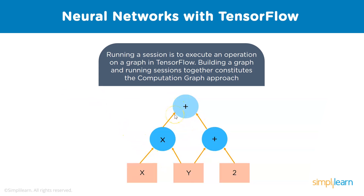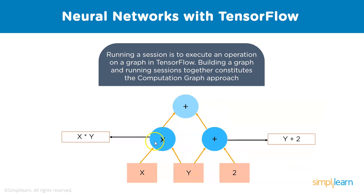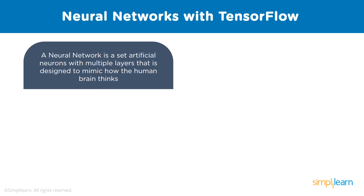Running a part of the graph is called running a session. After creating a graph, we might not want to run the entire graph — only part of it. To run a part, we create a session. A graph must be launched in a session to compute anything. Sessions place the graph outputs on hardware such as CPUs or GPUs and provide methods to execute them. Using a run method, we execute enough of the computational graph to get the desired output, saving computational power and increasing efficiency.